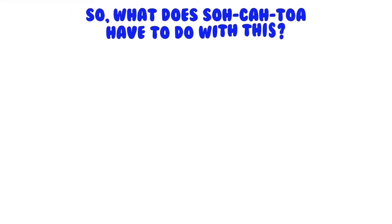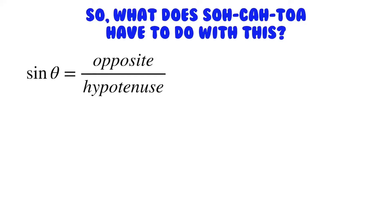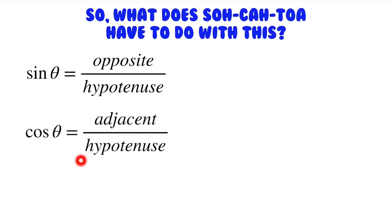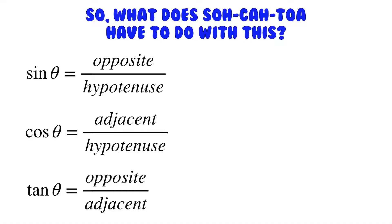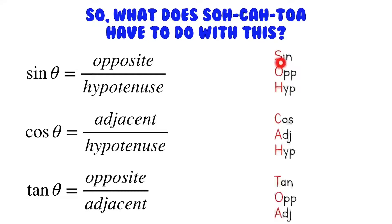So what does Sokatoa have to do with this? The sine of an angle in a right triangle is equal to the opposite leg over the hypotenuse. The cosine of an angle is equal to the adjacent leg over the hypotenuse. And tangent is the opposite leg over the adjacent leg. Some people have trouble remembering all of this, so that's why we have the acronym Sokatoa: SOH is sine equals opposite over hypotenuse, CAH is cosine equals adjacent over hypotenuse, and TOA is tangent equals opposite over adjacent.